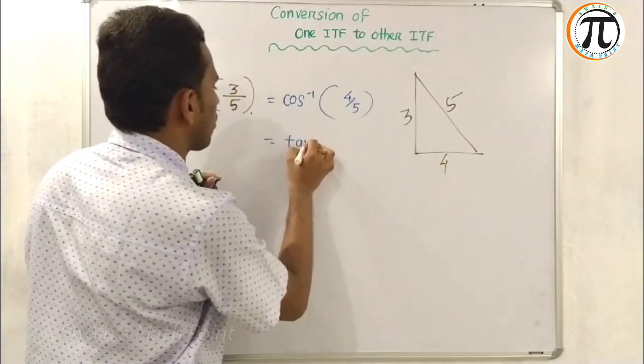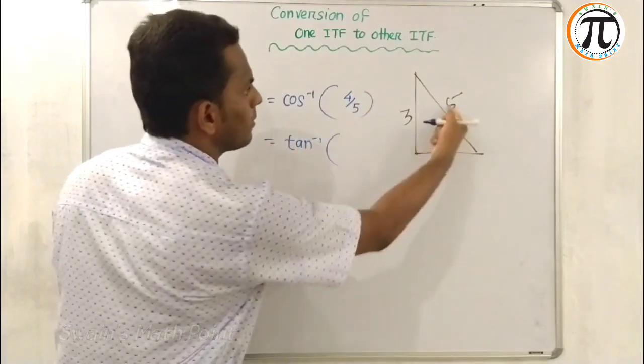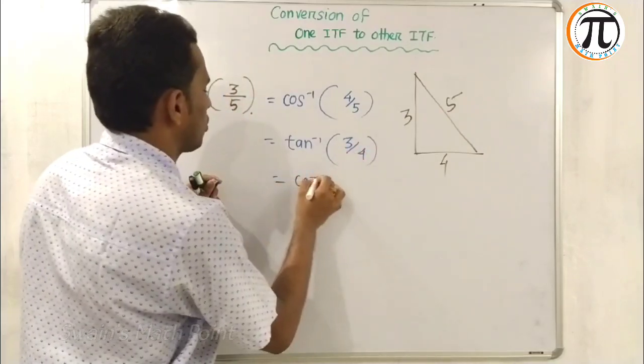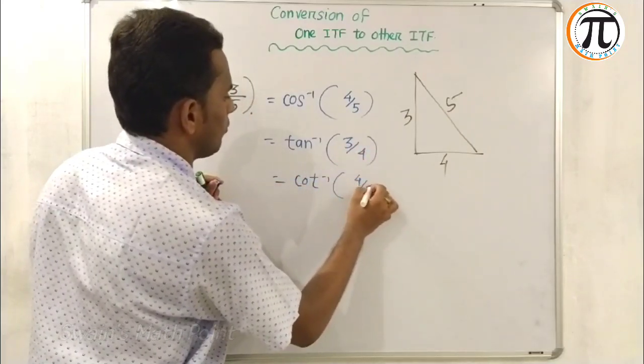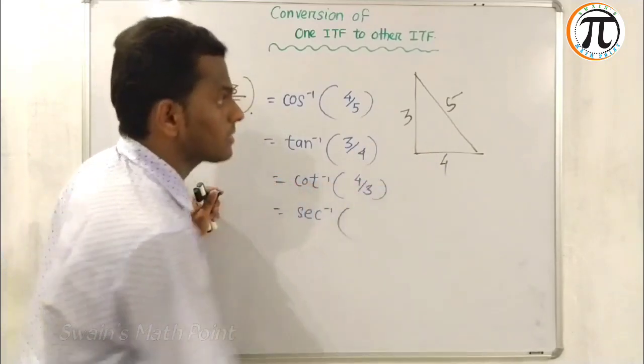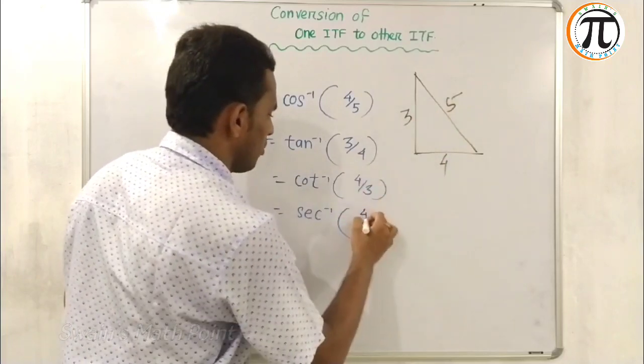If you want to convert to tangent, it's P by B, which is 3 by 4. If you want to convert to cotangent, it's automatically reversed. If you want secant, it's H by B, which is 5 by 4, because cosine is B by H.